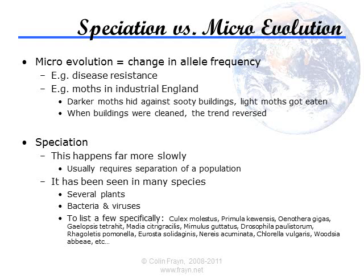What creationists are saying is that they agree allele frequency can change. For example, the well-documented story of moths in industrial England, where they gradually became darker to blend in with soot-covered buildings. As the air was cleaned up in the 20th century, the moths went back to lighter colours, because the buildings were no longer as dirty. Nobody is saying individuals changed colour or that moths had any choice — it's just shorthand for moths that blended in better being less likely to get eaten, surviving more, and having more offspring like them.